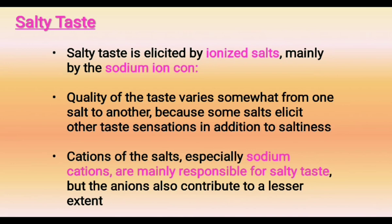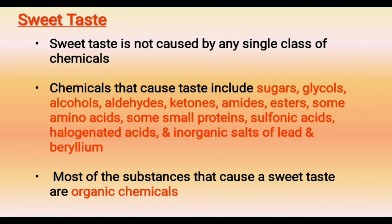Sweet taste is provided by a single class of chemicals. The chemicals involved in sweet taste include sugars, glycol, alcohol, aldehyde, ketones, amides, esters, amino acids, small proteins, sulfonic acids, halogenated acids, and inorganic salts of lead and beryllium. Sweet taste is contributed to by most of these organic chemical substances.